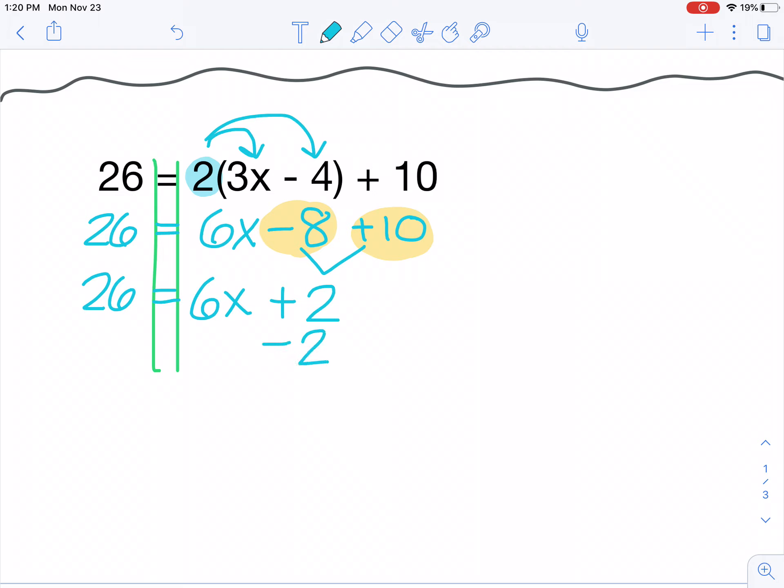I need to do the opposite of that plus 2, which would be subtracting 2. So 26 minus 2 leaves me with 24 equals 6x. And finally, I'm going to divide both sides by 6, which leaves me with an x value of 4. So hopefully you got x equals 4. If you didn't check your equation or you checked it and had the incorrect answer, you might want to go back and fix it now.